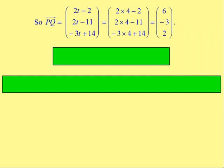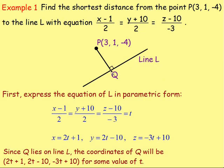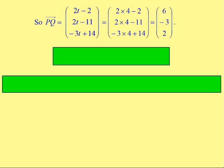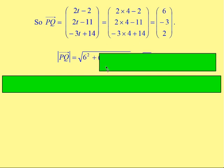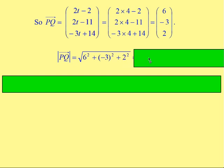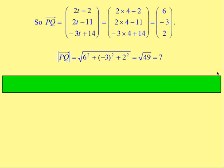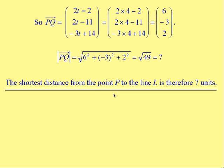So the components of vector PQ are 6, −3, and 2. To find the actual distance, we work out the magnitude of PQ: |PQ| = √(6² + (−3)² + 2²) = √(36 + 9 + 4) = √49 = 7. So the shortest distance from point P to line L is therefore 7 units.